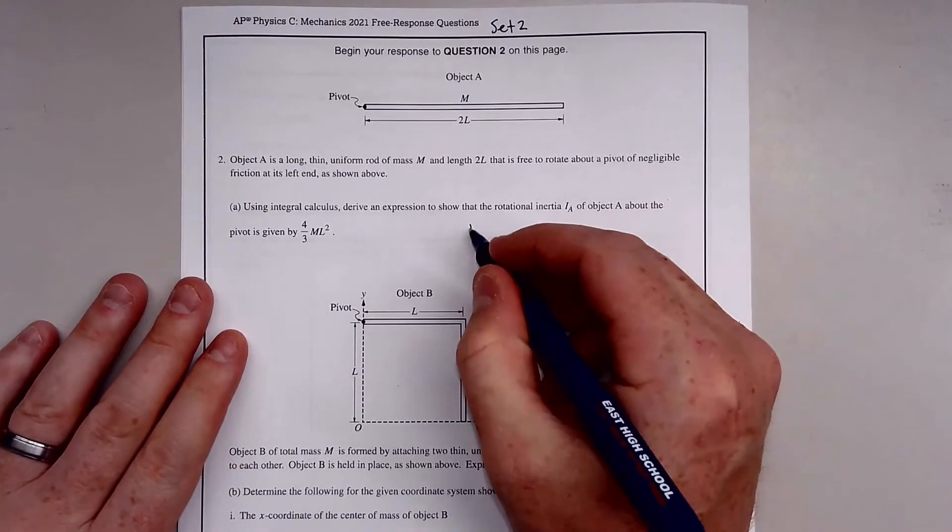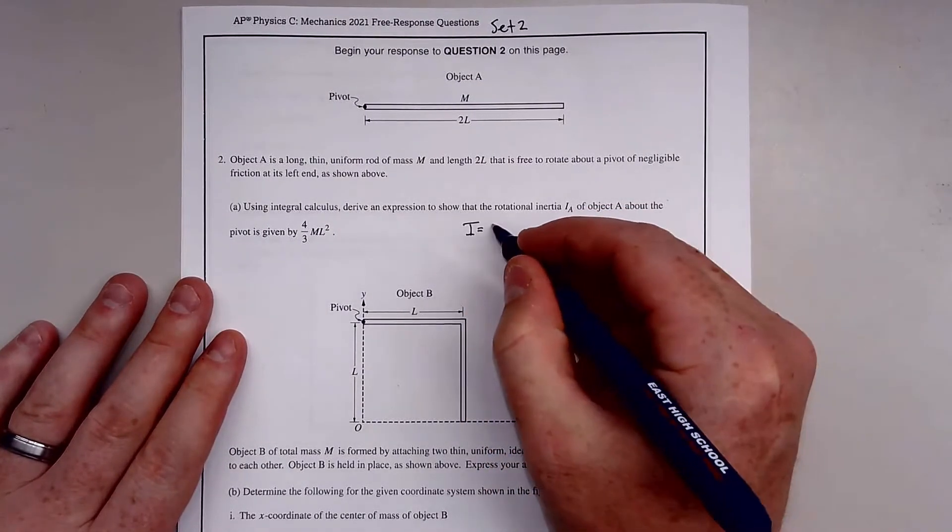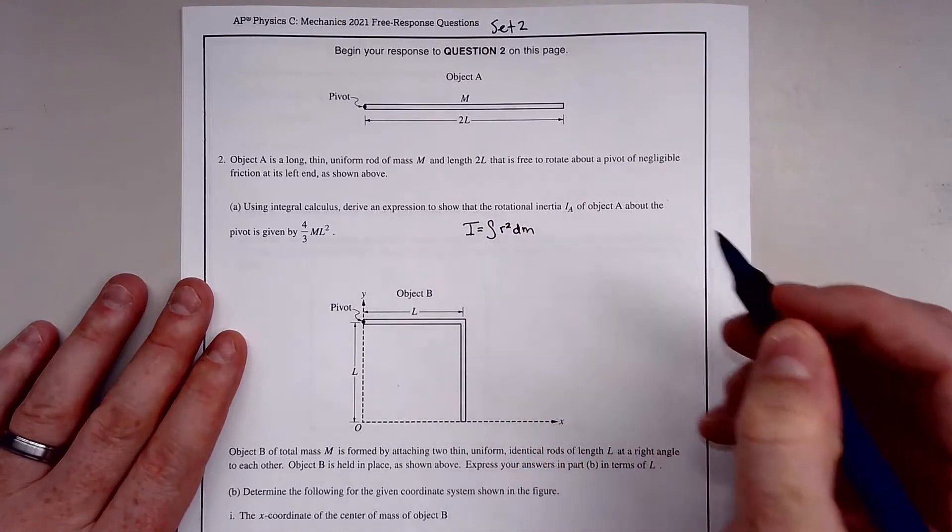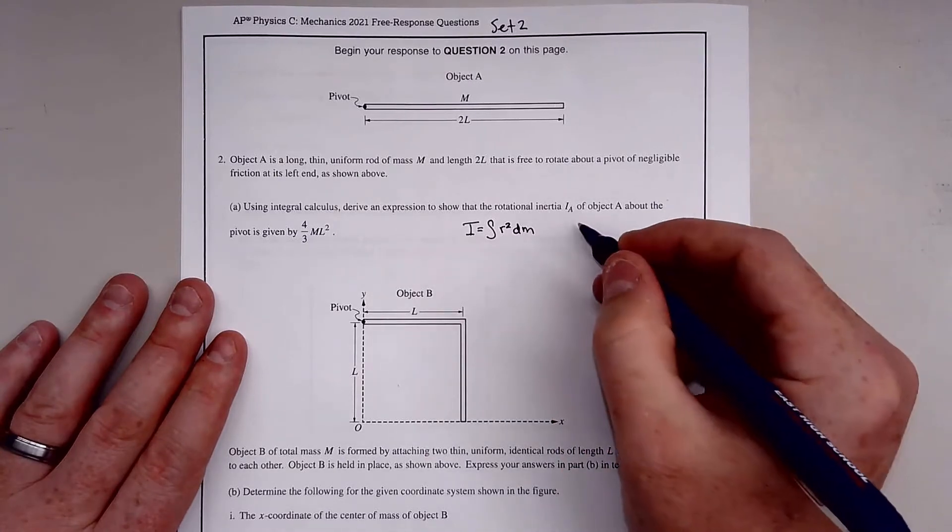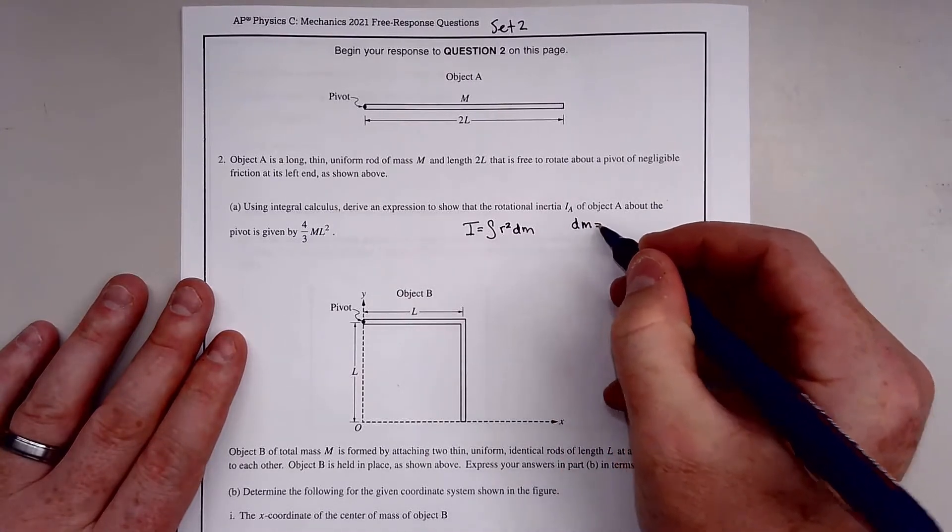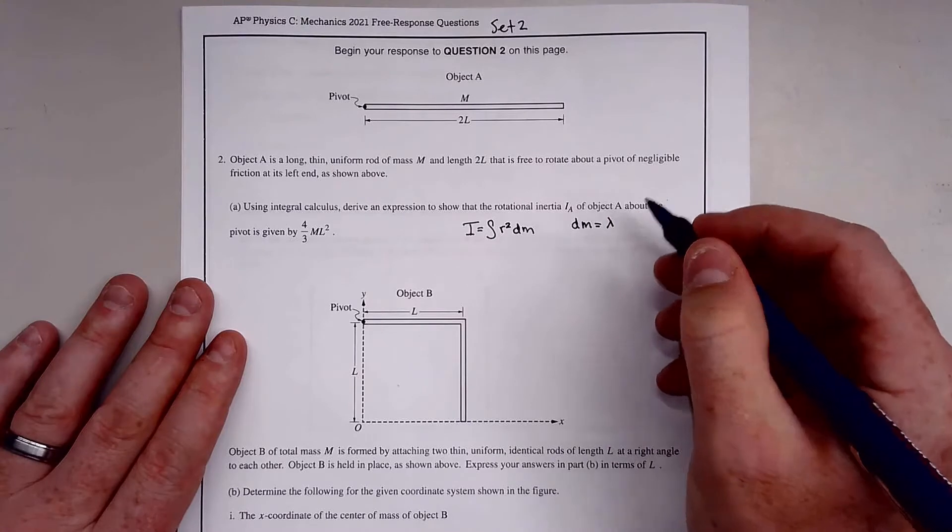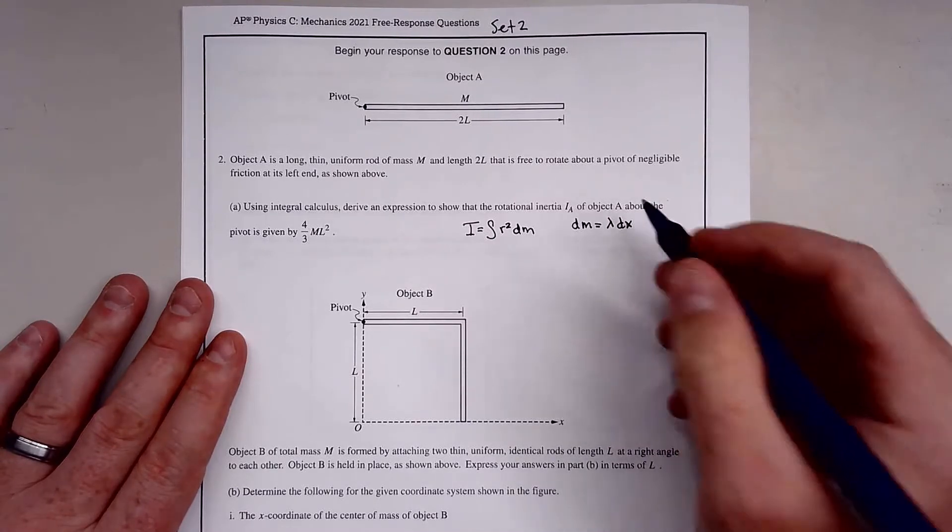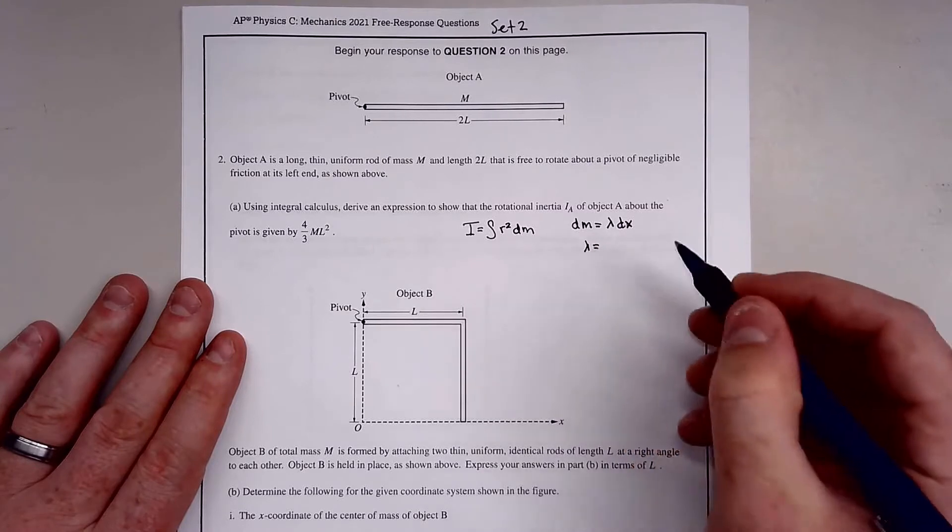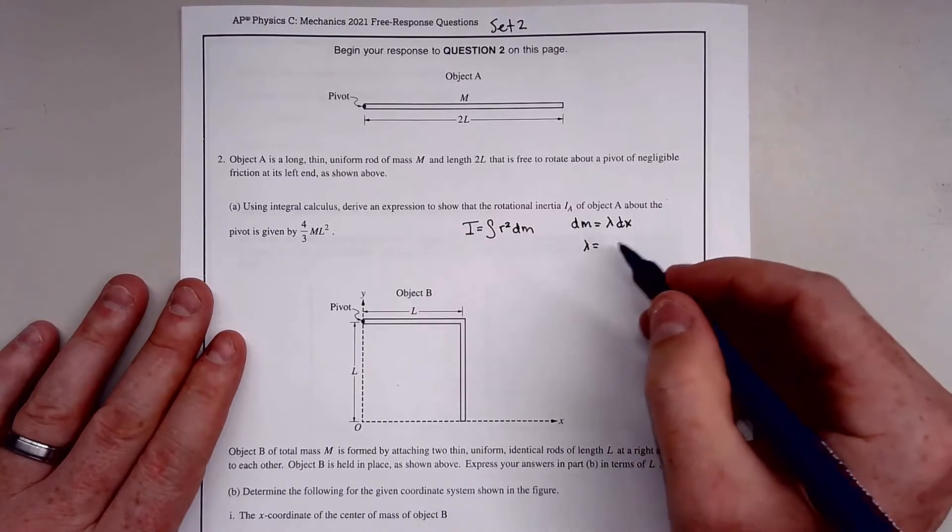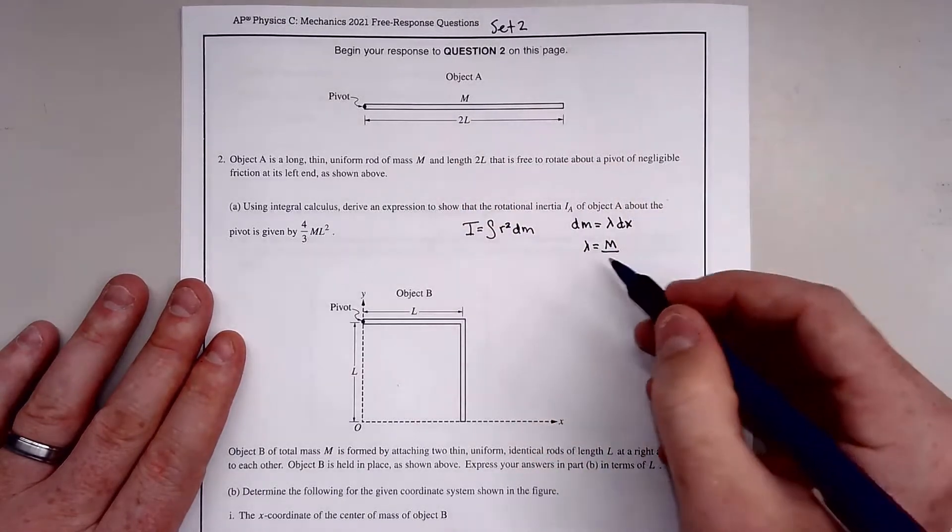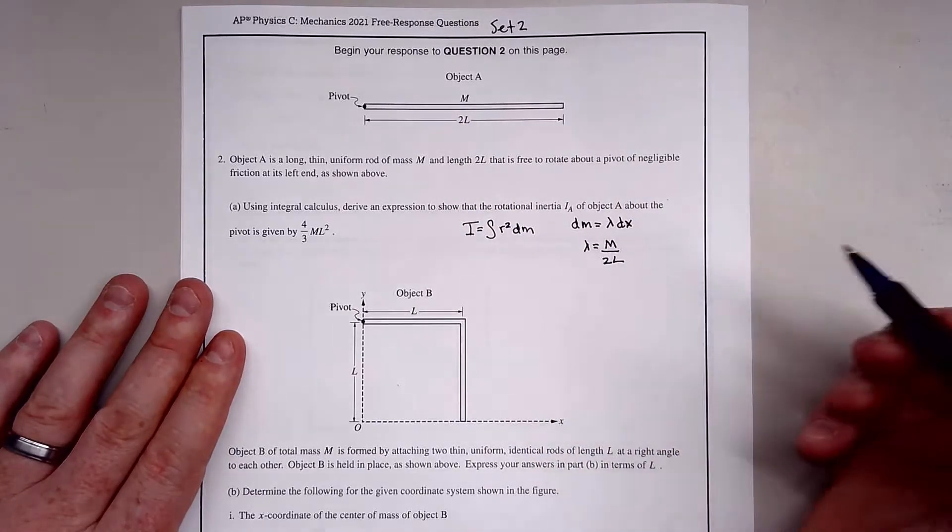We know the moment of inertia is equal to the integral of r² dm. This dm is changing mass over some linear mass density lambda. This lambda, our density, is mass over length, which is M over 2L.